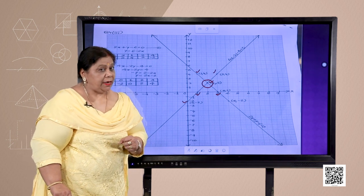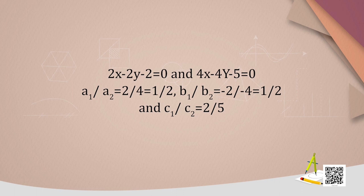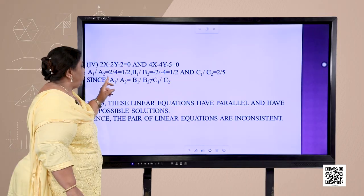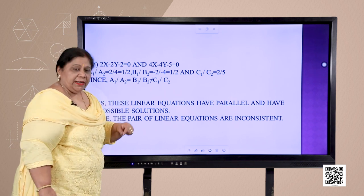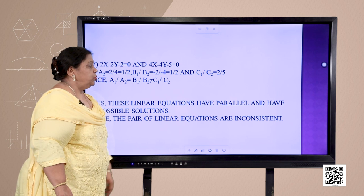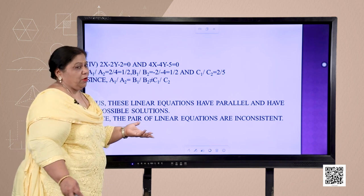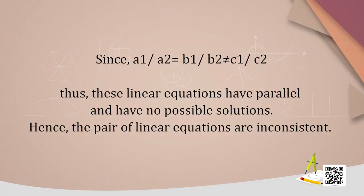Let us look into the fourth part: 2x − 2y − 2 = 0 and 4x − 4y − 5 = 0. Here a1/a2 = 2/4 = 1/2, b1/b2 = (−2)/(−4) = 1/2, whereas c1/c2 = 2/5. We notice that a1/a2 = b1/b2, but it is not equal to c1/c2. Thus these linear equations are parallel and have no possible solutions. Hence the pair of linear equations is inconsistent.